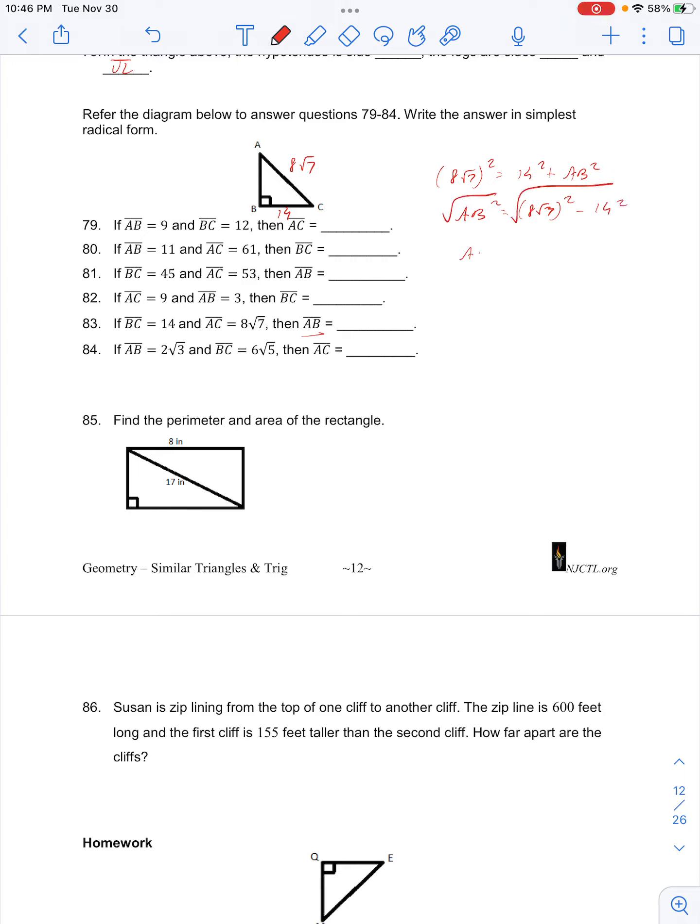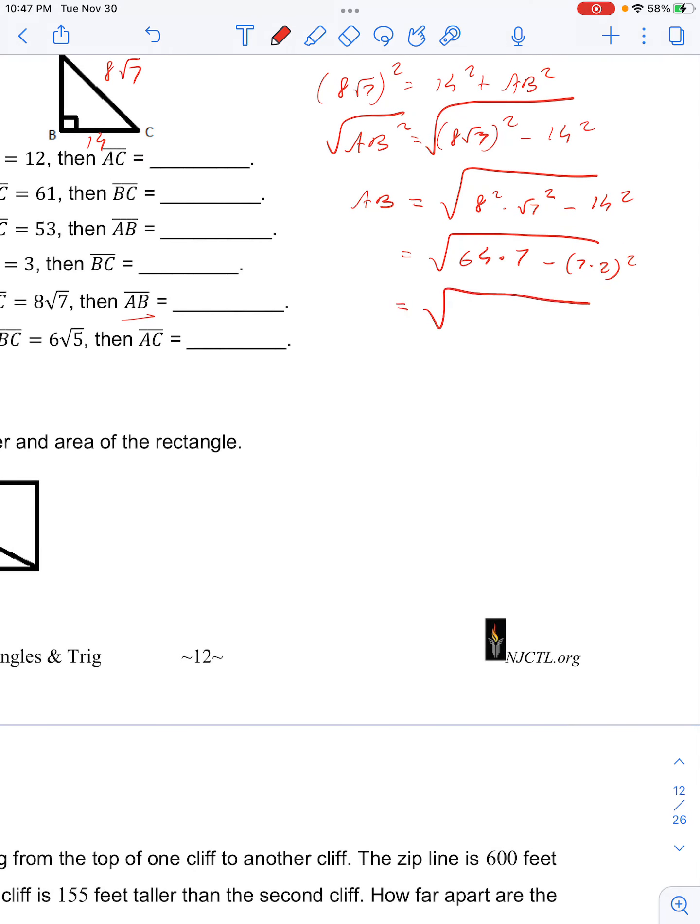Taking the square root, we'd have AB is equal to then 8 rad 7 squared is the same thing as 8 squared times radical 7 squared minus 14 squared. So that'll be 64 times 7 and then we have minus 14 squared. And in order to simplify the radical later, we'll break this 14 up into 7 times 2 and that's all squared.